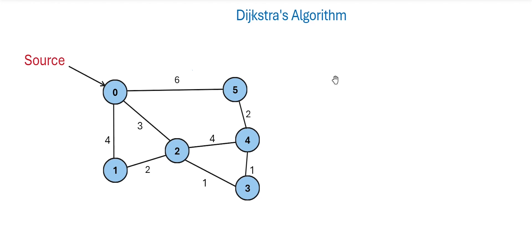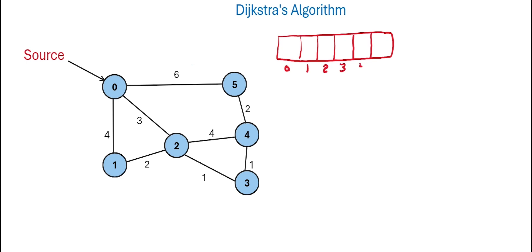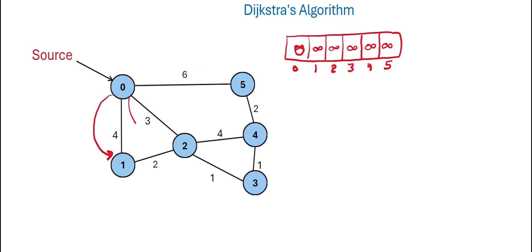Dijkstra's algorithm helps to find the shortest path from a source node to other nodes in a graph. For Dijkstra's algorithm, first we need a distance array to maintain the distances of all nodes from the source node. We take a distance array of size equal to the number of vertices, and initially set all distances as infinity — except for the source, where we set the distance to 0, because the distance from source to source is 0.